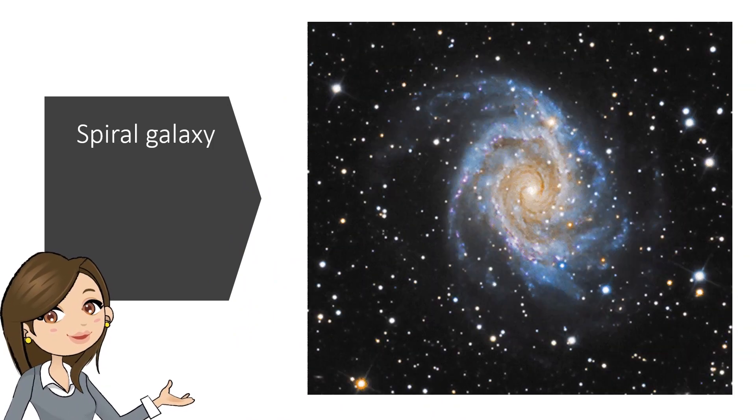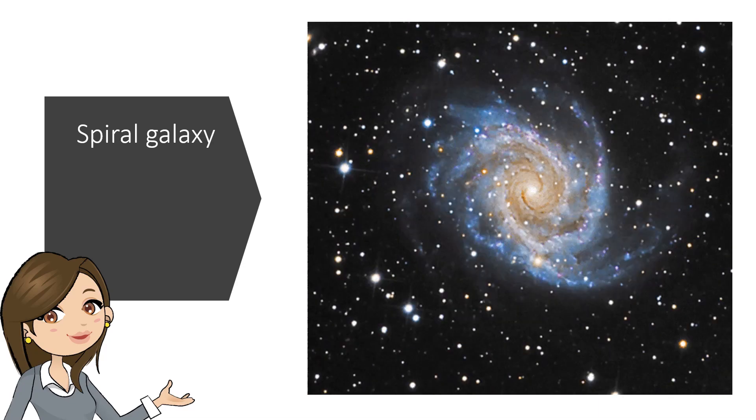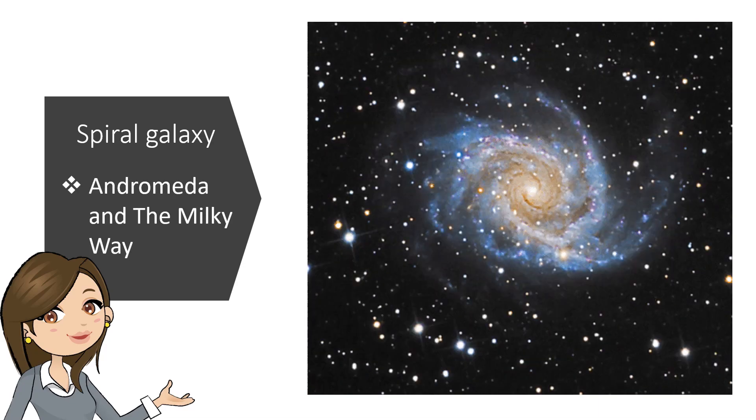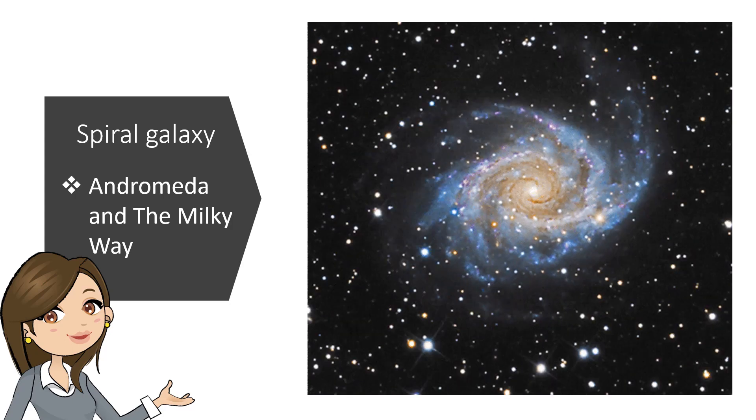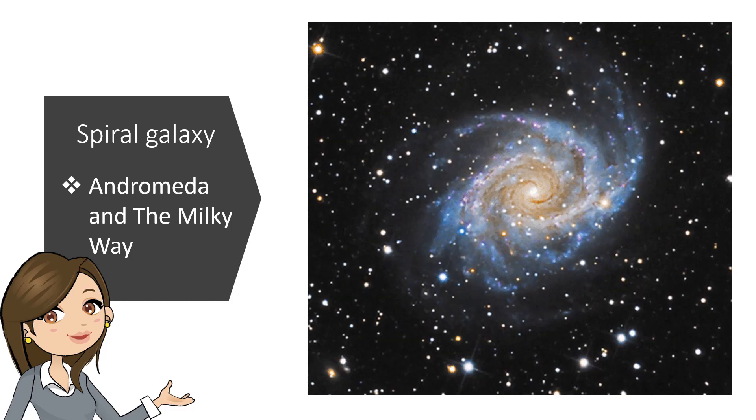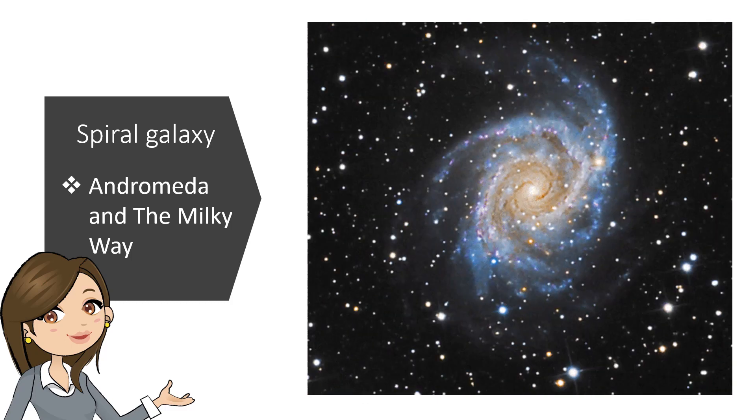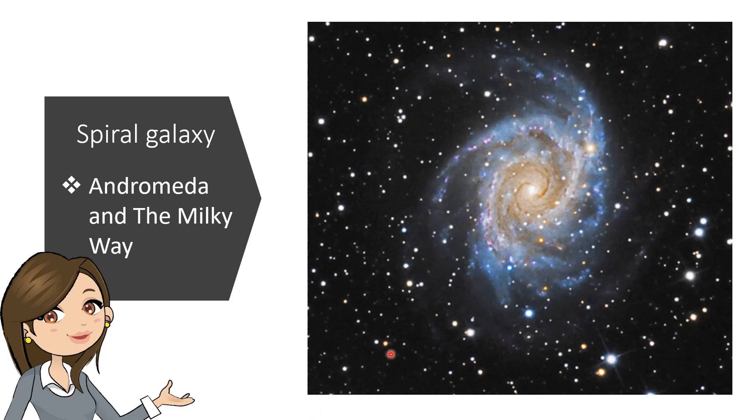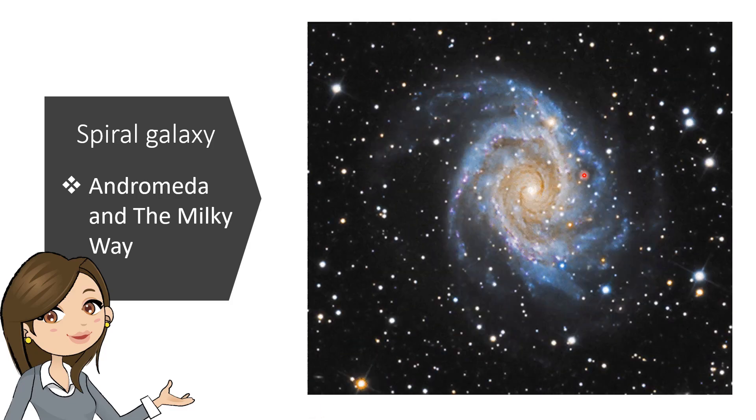Galaxies come in many forms. One of the examples of galaxies is Spiral Galaxy. Spiral Galaxy includes Andromeda and the Milky Way. The Milky Way is where our Earth locates in. Spiral Galaxy is named after its shape because it looks like a spiral shape.